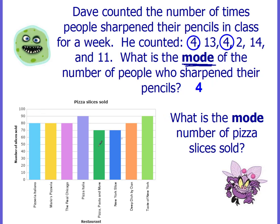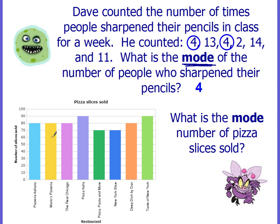You can also find the mode from a graph. What is the mode number of pizza slices sold? The restaurant names are on the x-axis at the bottom, and the y-axis tells you the number of slices sold. This is a bar graph, so it's pretty easy — you look for the bars that appear the most or have the same height. In this case it's going to be at 80. The values are 80, 80, 80, 90, 70, 70, 80, and 90. You can see that 80 appears the most, so 80 is the mode.